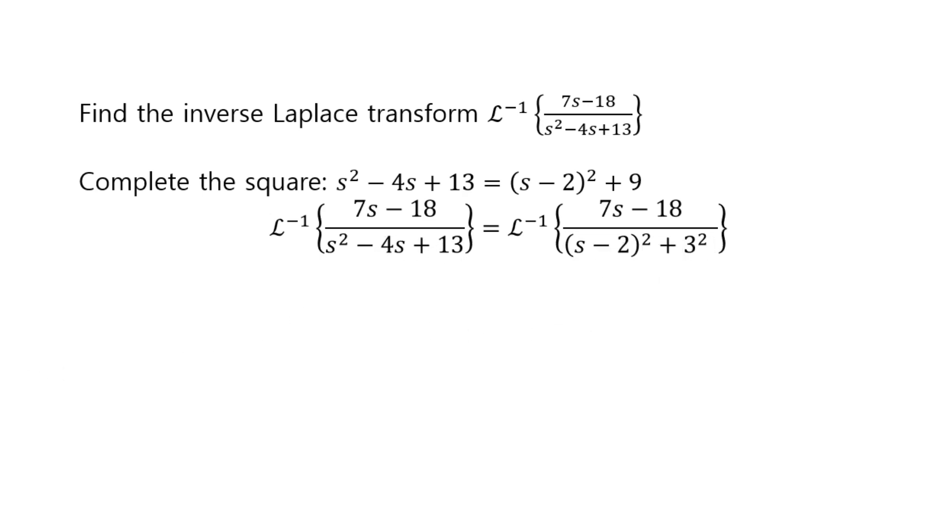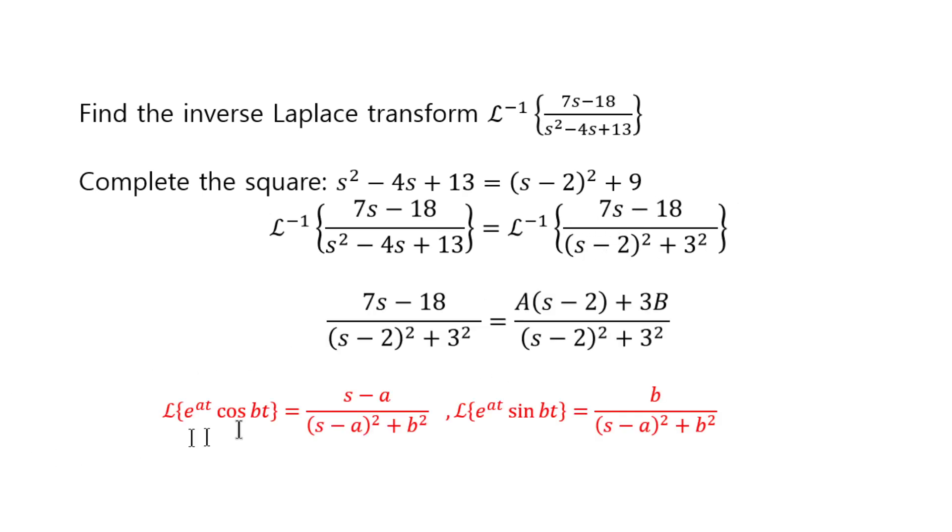Then, what's needed is to split this into two fractions in the following form. I need it to be split into something times s minus 2 over s minus 2 squared plus 3 squared, and 3 times b over s minus 2 squared plus 3 squared.